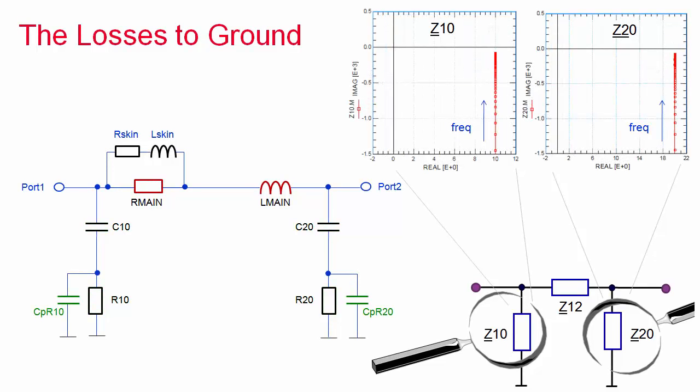Therefore, in our SPICE model, the resistors R10 and R20 are shorted by capacitors. And as a consequence, the trajectories in the impedance plot tend towards zero at high frequencies.